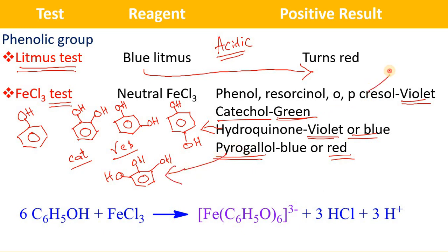You also have cresols. The cresols are orthocresol, metacresol, and paracresol. In the cresol structure there is an OH group on the benzene ring with a CH3 group. When CH3 is at the ortho position it is orthocresol, when CH3 is at the meta position it is metacresol, and when CH3 is at the para position it is paracresol.